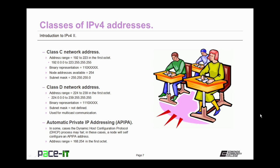Then there are Class C network addresses, with an address range in the first octet of 192 up to 223. That means an address range of 192.0.0.0 up to 223.255.255.255, and the first octet always begins with 110. Class C network addresses give us a possible 254 host addresses, and the subnet mask is always 255.255.255.0.